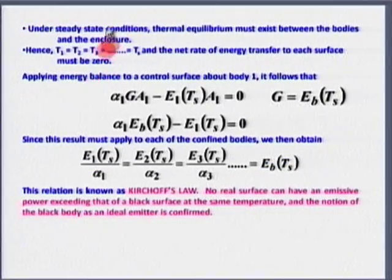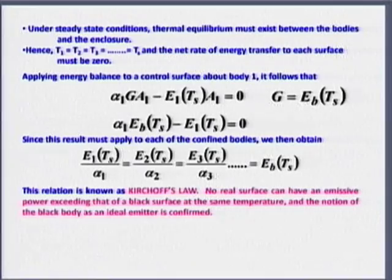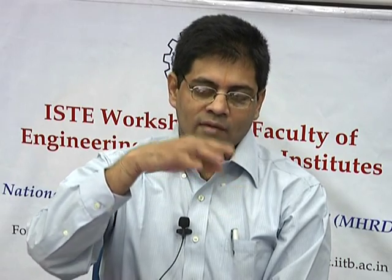Under steady-state conditions — why steady state again? If unsteady, there would be interaction between different parts of the cavity and between the balls. Under steady state, the bodies have been there sufficiently long and have reached equilibrium temperature T_s. This is very, very important — this is probably the biggest limitation of Kirchhoff's law. If the body is at 300 K and the room is at 1000 K, then alpha equal to epsilon is not valid.